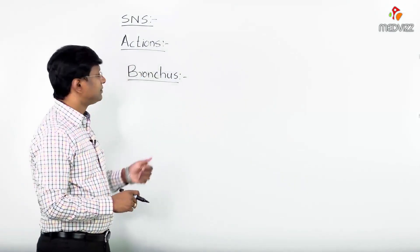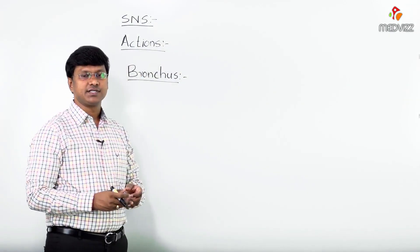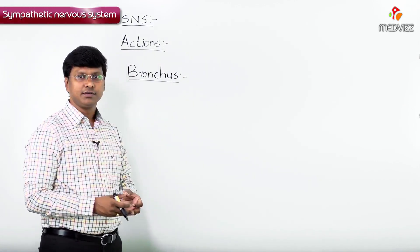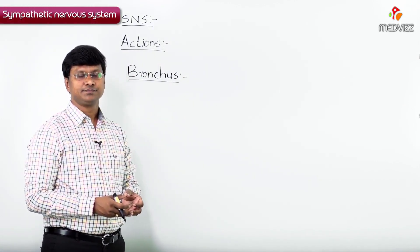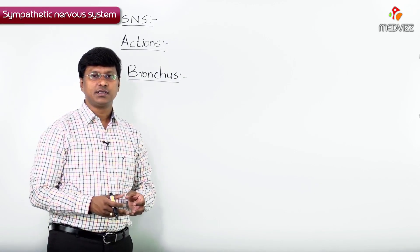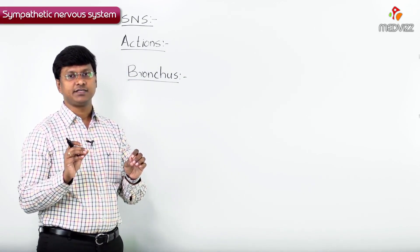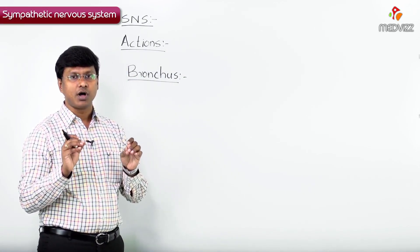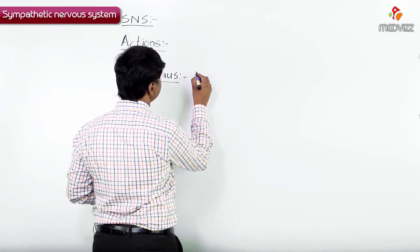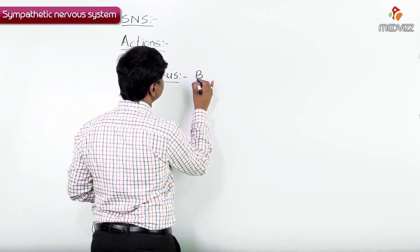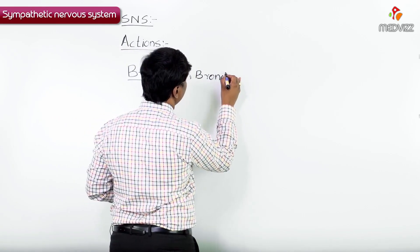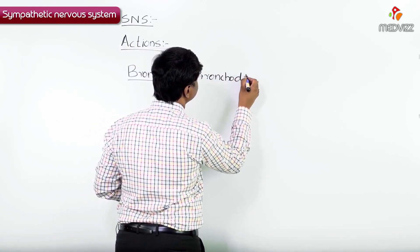Let me discuss the actions of the sympathetic nervous system on the bronchus. The major action of the sympathetic nervous system on the bronchus is bronchodilation.